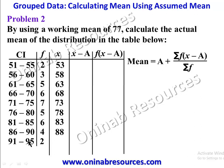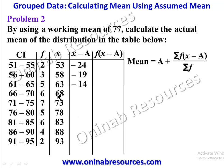Now for the x minus a column, subtracting the assumed mean of 77 from each midpoint: 53 minus 77 gives negative 24; 58 minus 77 gives negative 19; 63 minus 77 gives negative 14; 68 minus 77 gives negative 9; 73 minus 77 gives negative 4.